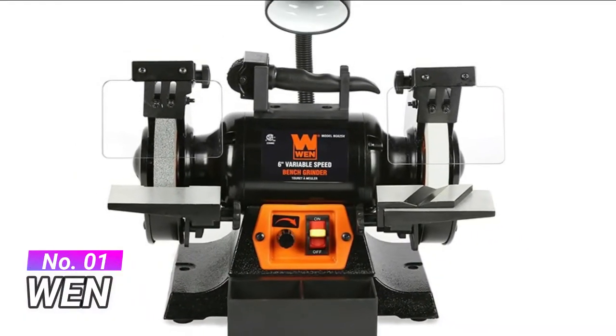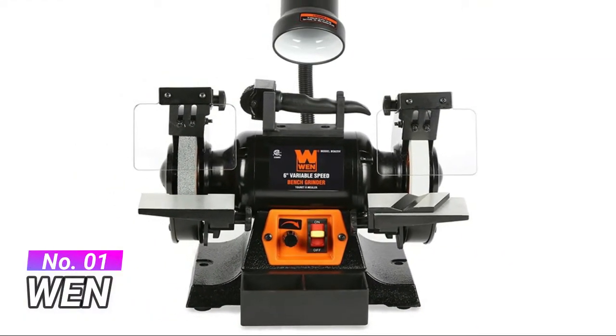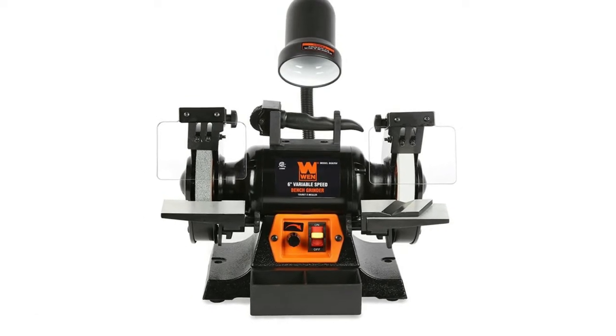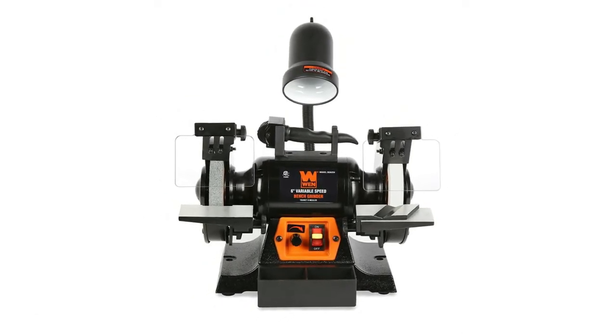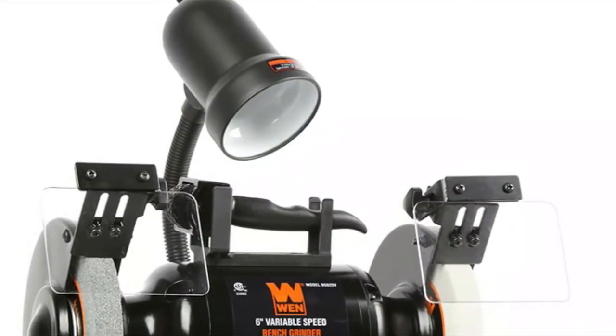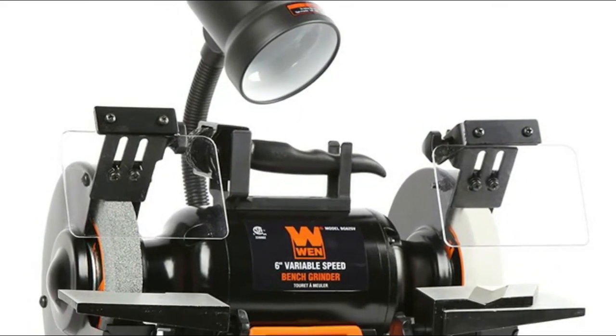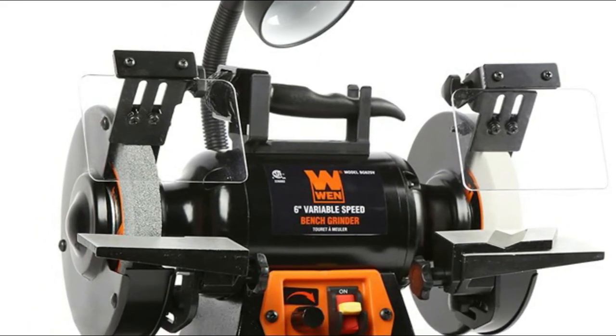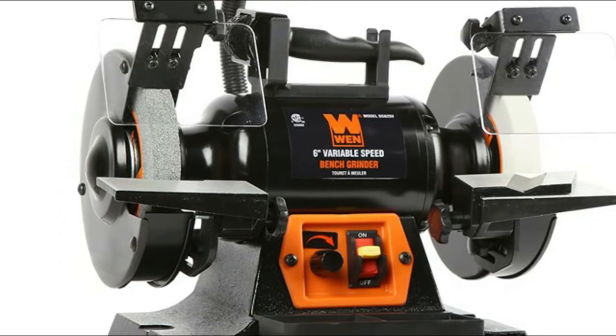Number 1, WEN. Perfect for reviving old tools, knives, bits and more. Flexible work light illuminates your project during operation. With quiet 2.5 amp variable speed motor, expect quick startups and smooth performance at speeds anywhere from 2000 to 3400 rotations per minute.